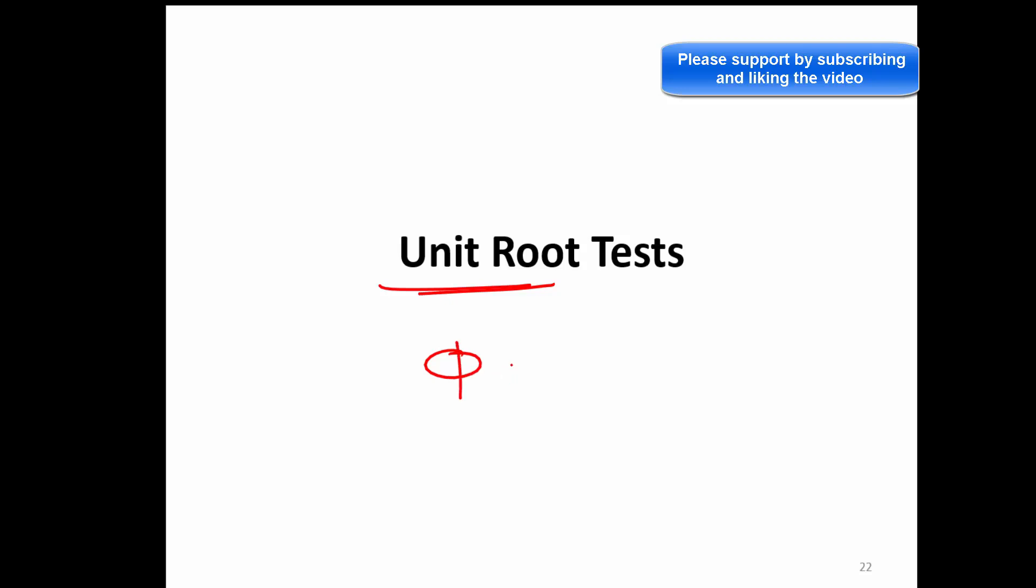We'll discuss how to find out whether the phi that we talked about in the non-stationary series is 1 or not. In a stochastic time series that we have just learned, if phi is 1, then we assure it's a random walk process, and that's what we call a unit root.